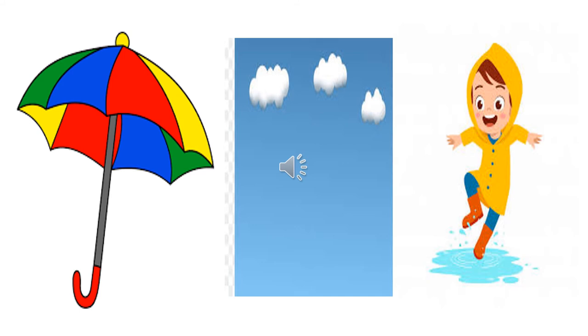The next word is umbrella. This is an umbrella. This is a colorful umbrella. I have a small red umbrella. Umbrella protects us from the rain.